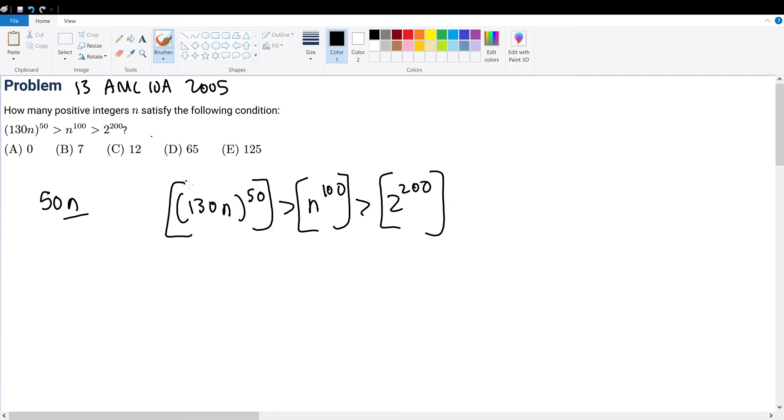We can raise this entire thing to the 1 over 50th power which is the same thing as taking the 50th square root of the number. We can do this to simplify the inequality and we know that by raising a power to each element within an inequality will not change the inequality symbol. So we can be safely sure that the less than sign will remain as so.